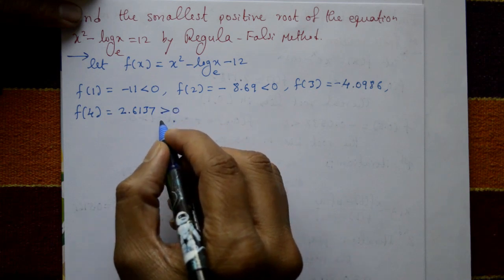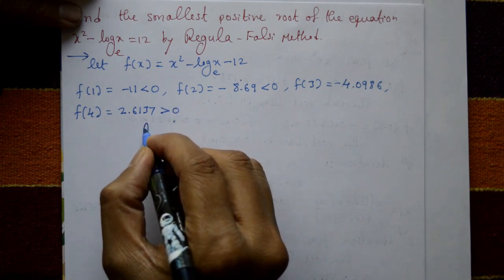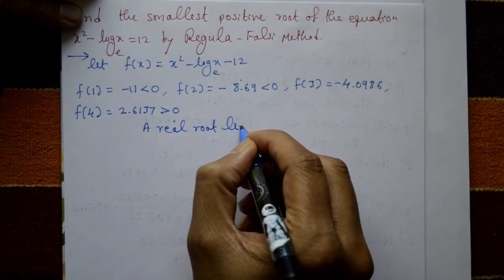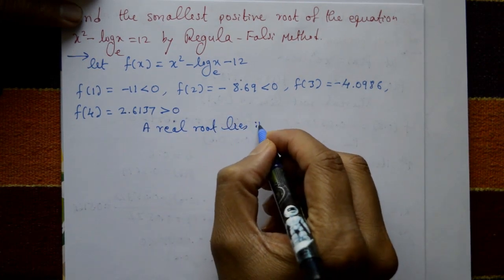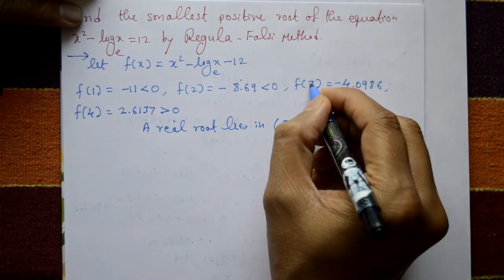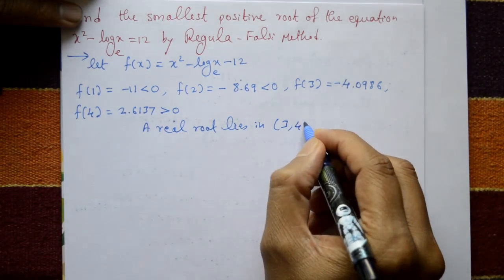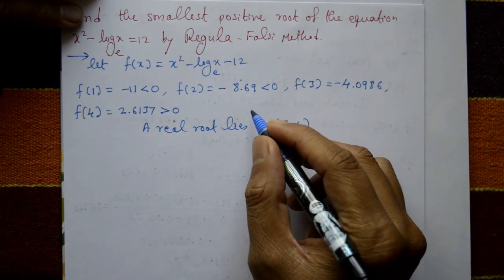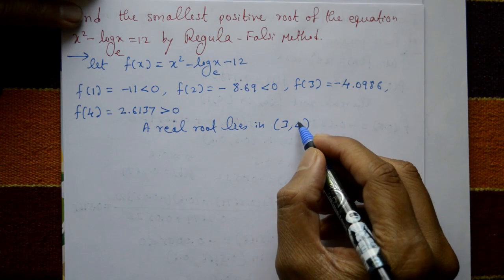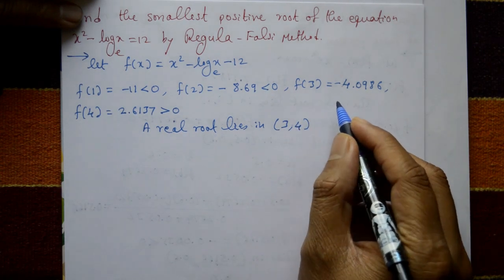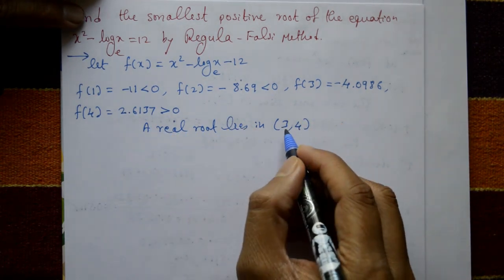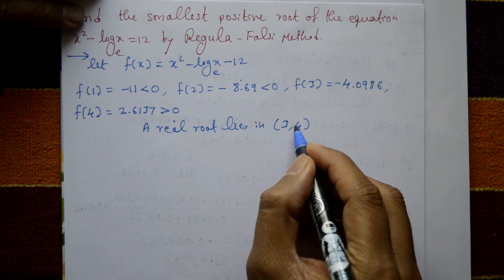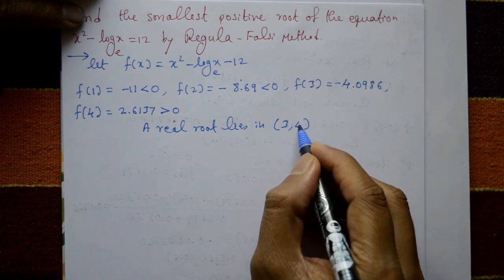The real root lies in the interval 3 and 4. We require one value less than 0 and one greater than 0, both close to 0. Taking smaller intervals: 3.1, 3.2, 3.4 up to 4.